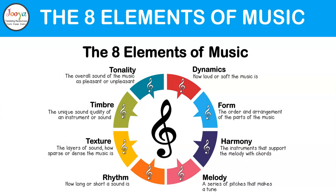Here are the definitions of each element of music. Dynamics simply refers to how loud or soft the music is. Form or structure is the order and arrangement of the parts of the music. Harmony is the instruments that support the melody with chords. Melody is a series of pitches that makes a tune. Rhythm is how long or short a sound is. Texture refers to the layers of sound and how sparse or dense the music is. Timbre is the unique sound quality of an instrument, and tonality is the overall sound of the music as pleasant or unpleasant.